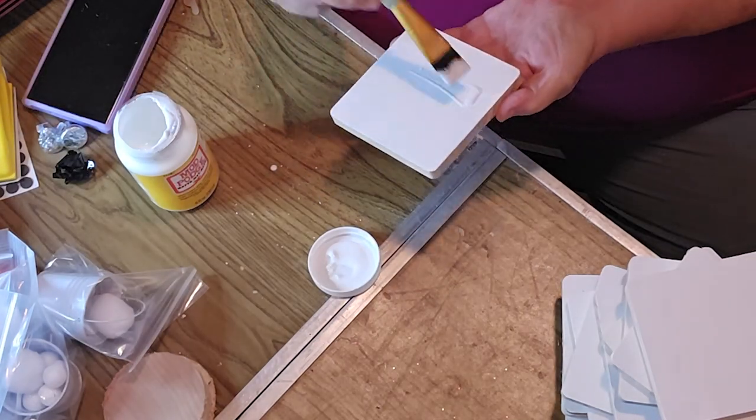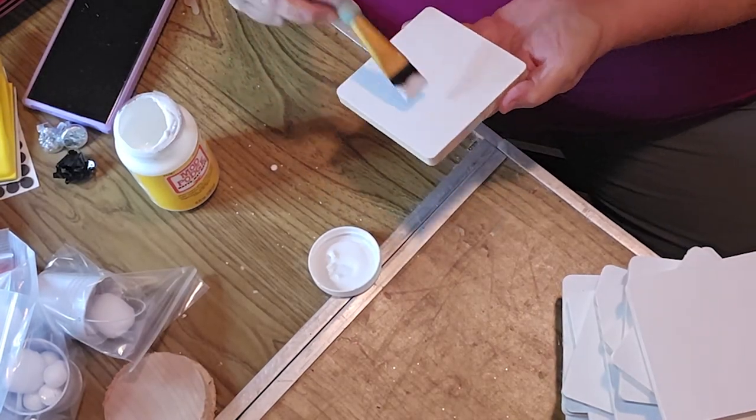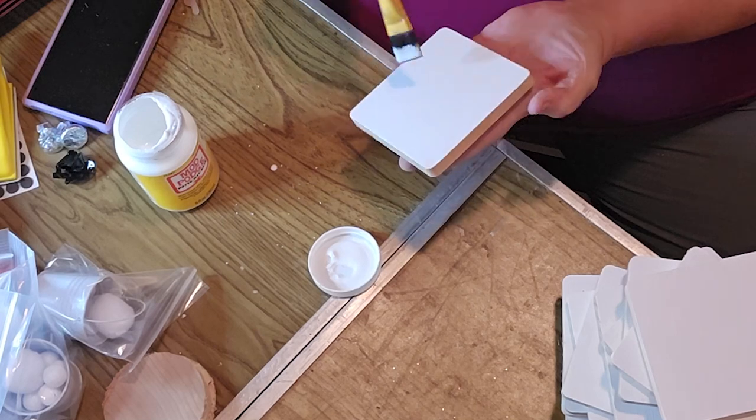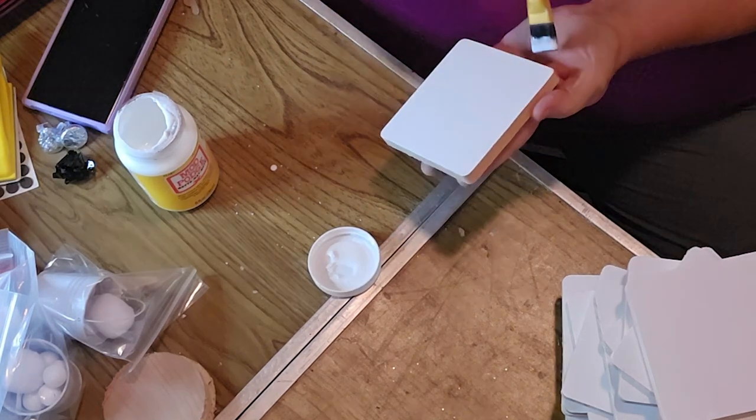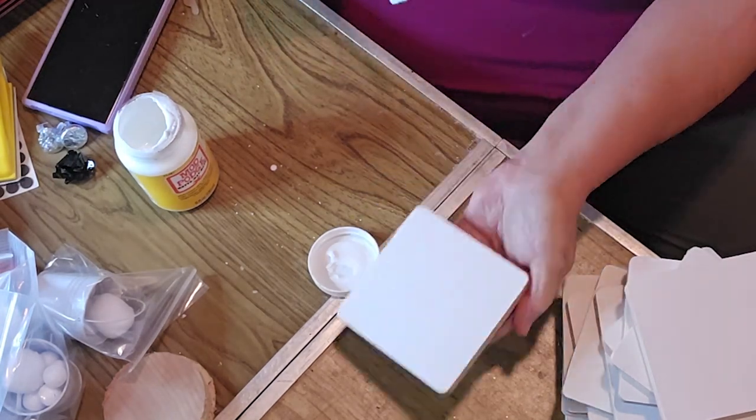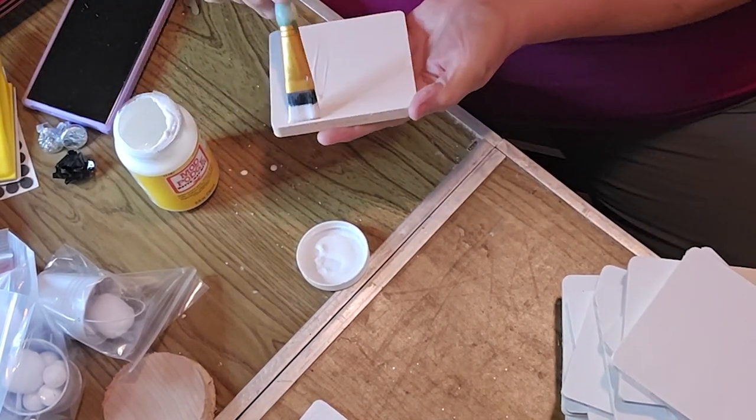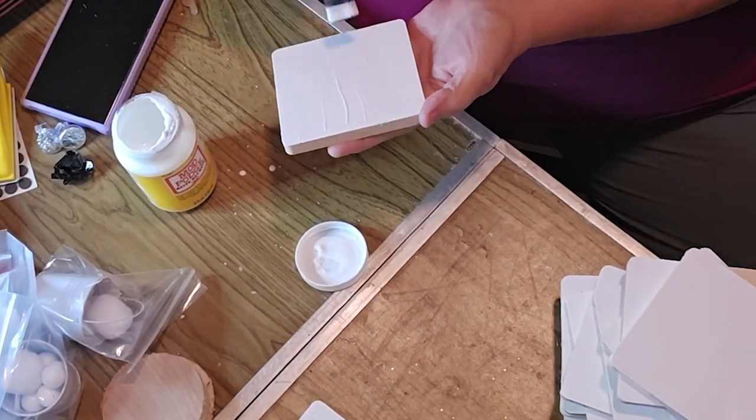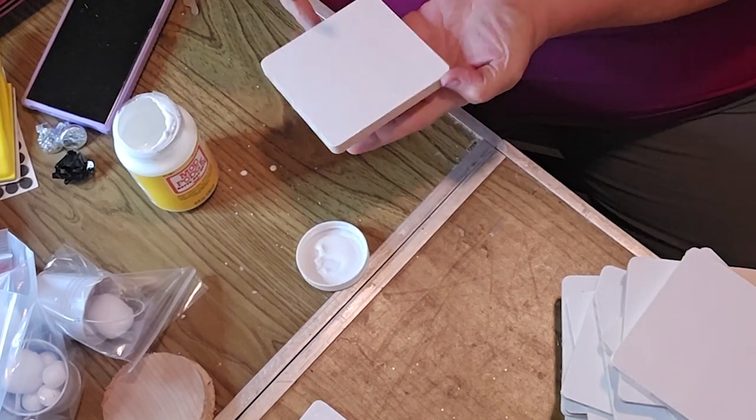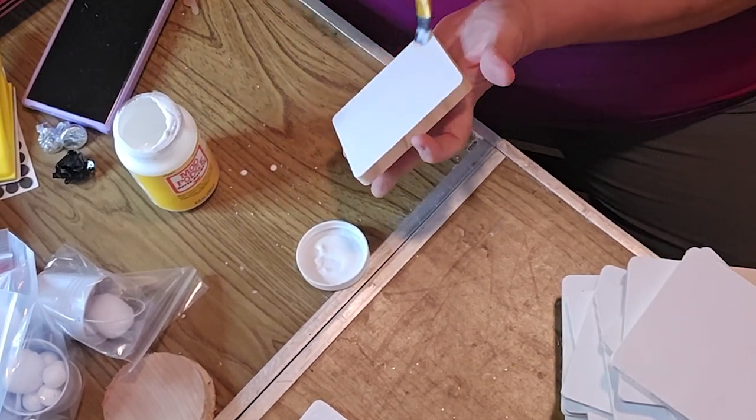We chose to use the iron-on method for this. So with the iron-on method, you just put the Mod Podge on, you let it dry, and then you use a heat press or like a little mini press.